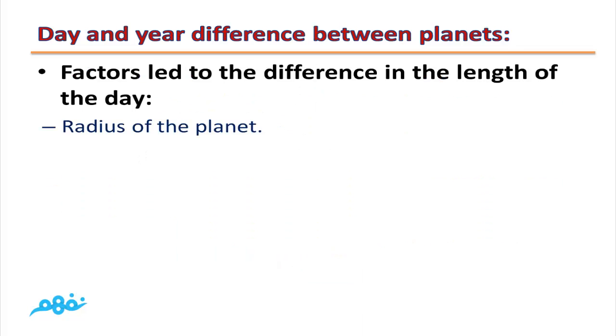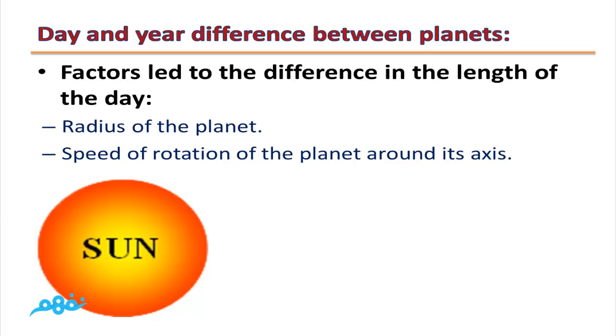Factors led to the difference in the length of the day. The first factor is radius of the planet. As the radius of the planet increases, the length of the day on it increases. The second factor is speed of rotation. As the speed of rotation of the planet increases around its axis, the length of its day decreases.